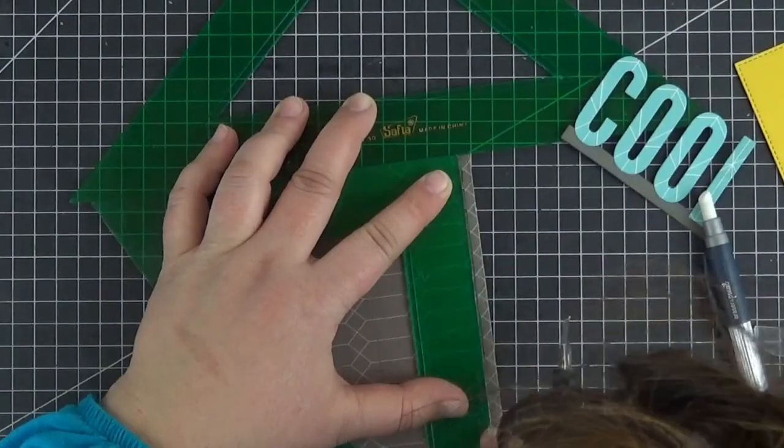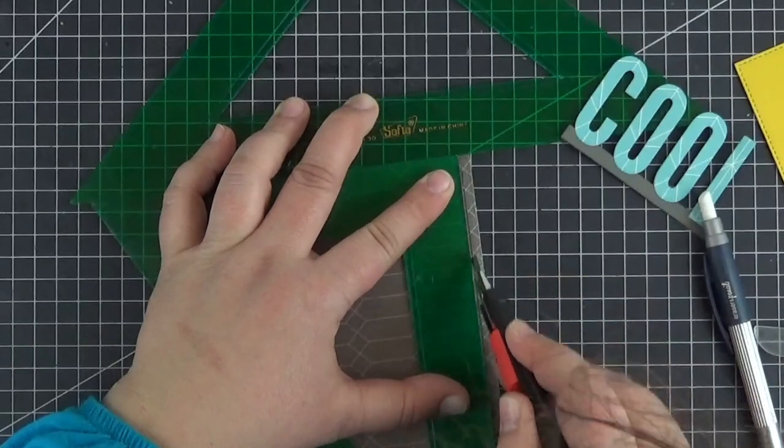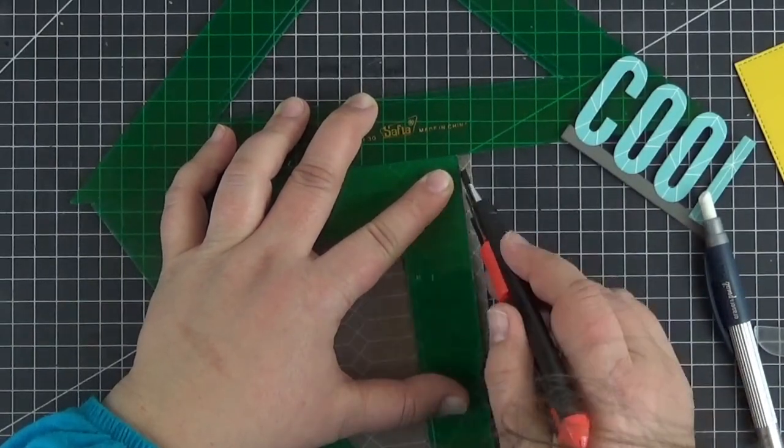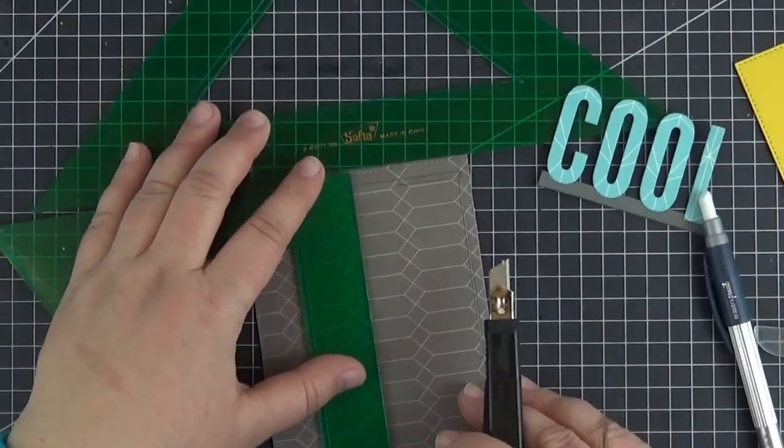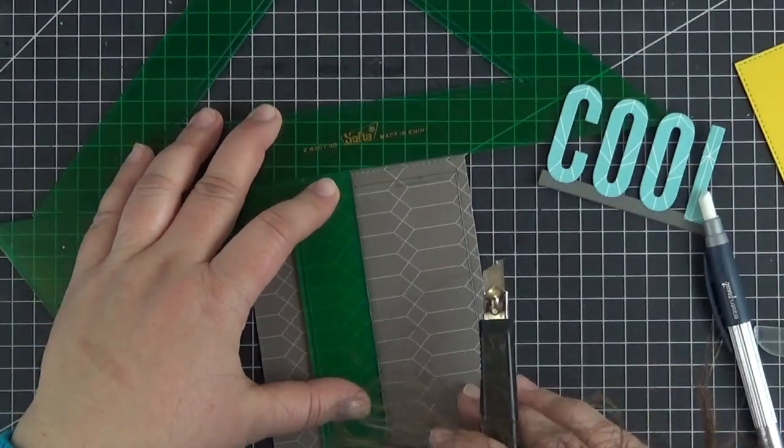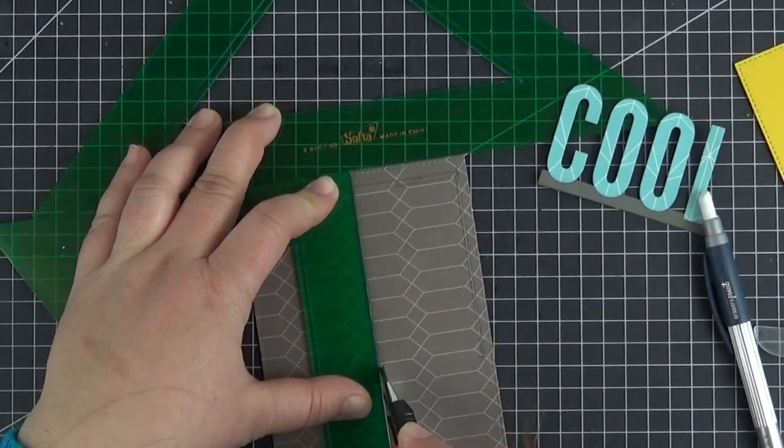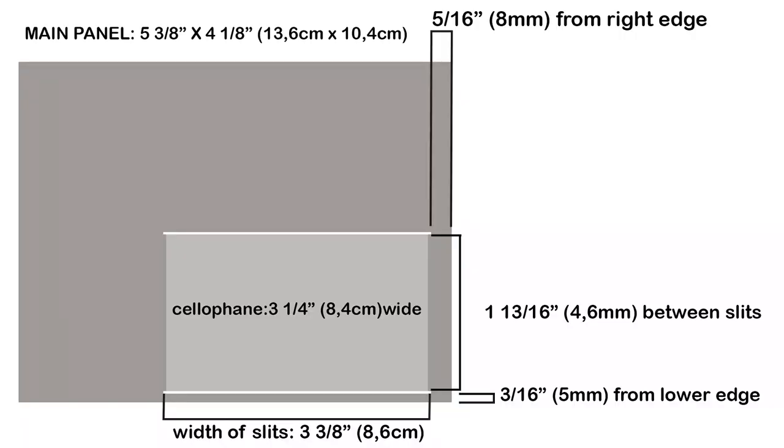Now I'm using a craft knife to cut the two parallel slits for the cellophane strip. It's also a good idea to widen the slits just a smidge since this cardstock is quite heavyweight and is covered with a sheet of paper as well. Okay, so here are the measurements of the main panel. I'll give you a couple of seconds to check them out and to do a screen capture if you want to.